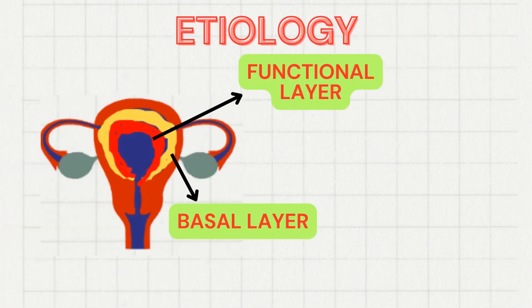Let us now see the etiology or causes of adenomyosis. It is important to know how this endometrium gets into the myometrium. The endometrium has two layers: the functional layer, which is shed during menstruation, and the basal layer, which lies in close proximity just above the myometrium. The primary cause of adenomyosis is considered to be the abnormal invagination or seeping of the basal layer of the endometrium into the myometrium.